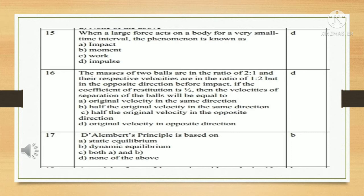Question number 16: The masses of two balls are in the ratio of 2 to 1, and their respective velocities are in a ratio of 1 to 2, but in opposite directions before impact. If the coefficient of restitution is 1/2, then the velocity of separation of the balls will be equal to. Answer is D: original velocity in opposite direction.